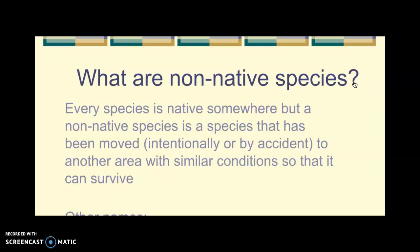Every species is native somewhere, but a non-native species is one that has been moved — either intentionally, like buckthorn brought to the United States intentionally at first, or by accident, like the zebra mussel and the brown tree snake, which were accidentally brought somewhere else. A non-native species is one that has been moved to another area with similar conditions where it is able to survive.